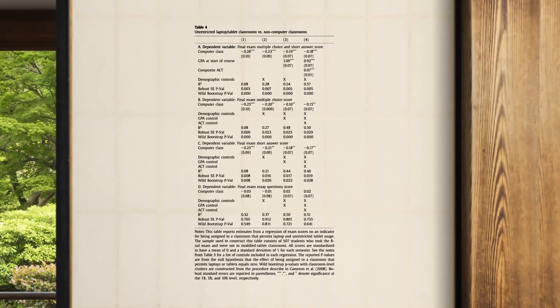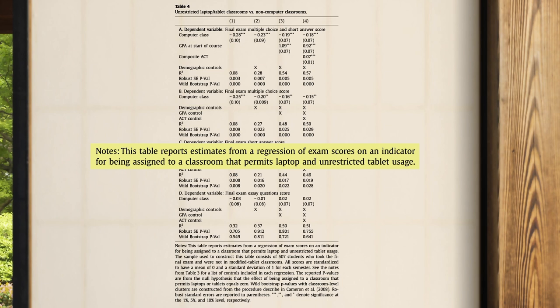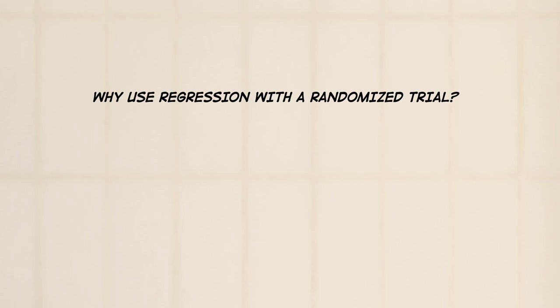Now, we get to the article's punchline. Table 4. This table reports regression estimates of the effects of electronics use on measures of student learning. Why does the study report regression estimates?